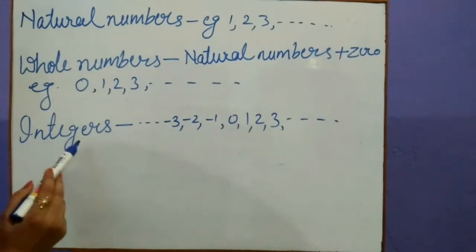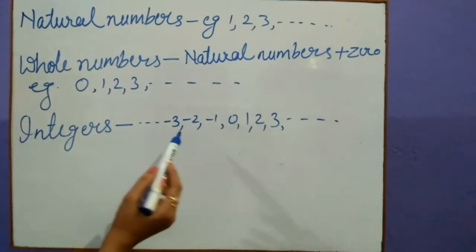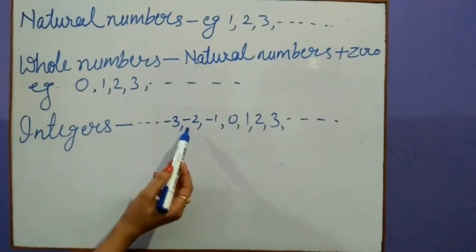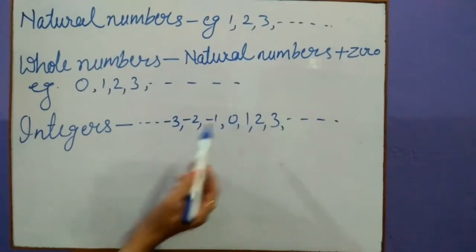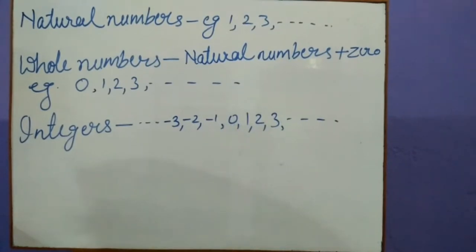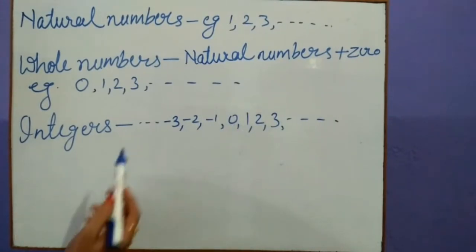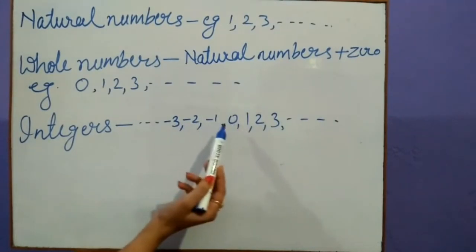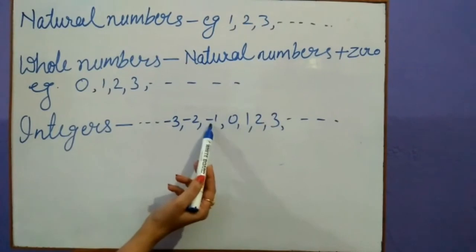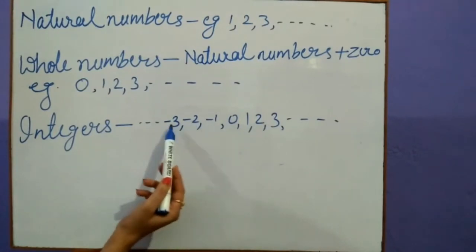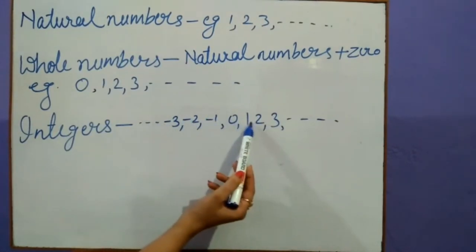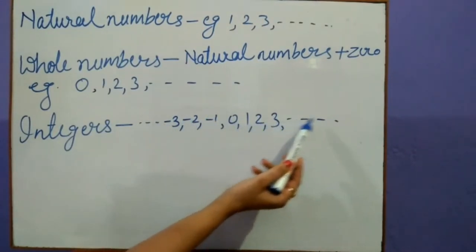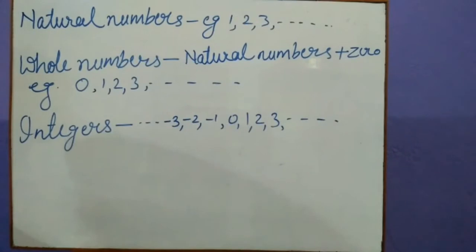Integers: the combination of negative numbers and positive numbers along with 0 are called integers — such as 0, minus 1, minus 2, minus 3 and so on, and 1, 2, 3 and so on.